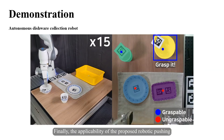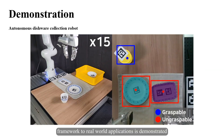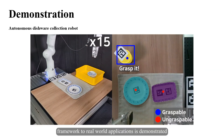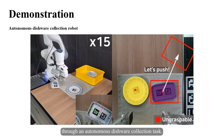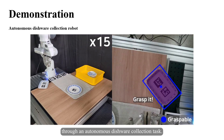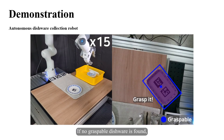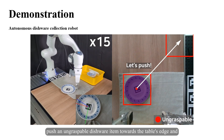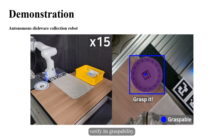Finally, the applicability of the proposed robotic pushing framework to real-world applications is demonstrated through an autonomous dishware collection task. If no graspable dishware is found, the robot pushes an ungraspable dishware item towards the table's edge and verifies its graspability.